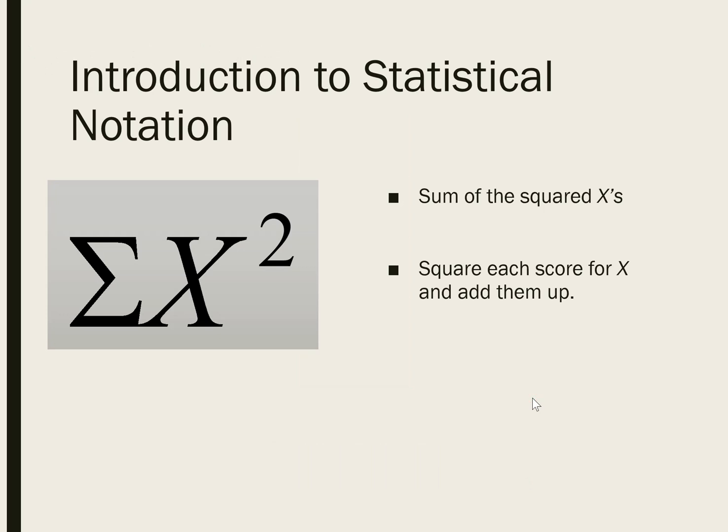Now, here we have something a little bit more complicated. What this is telling us to do is to take the sum of the squared X's. So following order of operations, we would square all the scores for the variable X, and then add up the total.